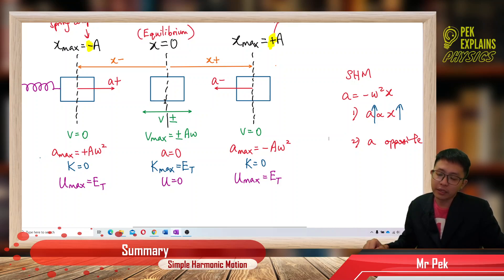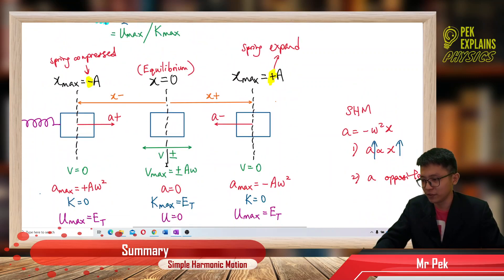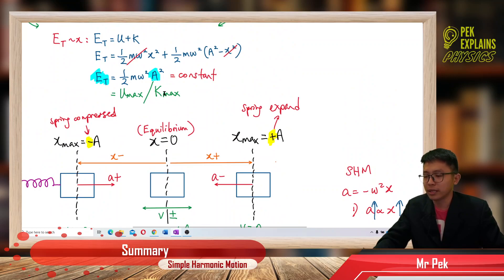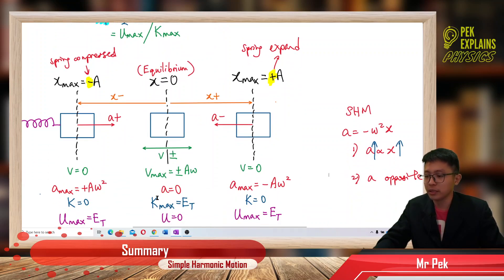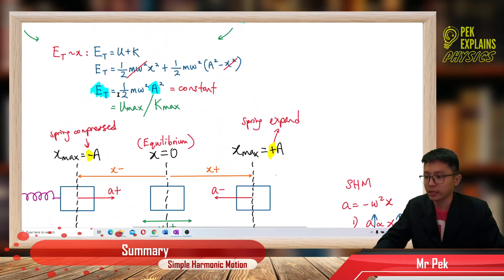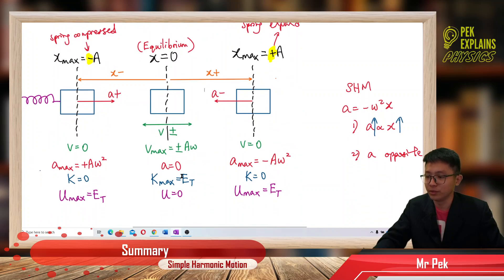Velocity is maximum at the center, so kinetic energy is also maximum at the center. From the first video, maximum kinetic energy equals the total energy, which is ½mω²A². At the equilibrium position, maximum kinetic energy equals the total energy: ½mω²A². Kinetic energy is zero at the amplitude because velocity is zero.